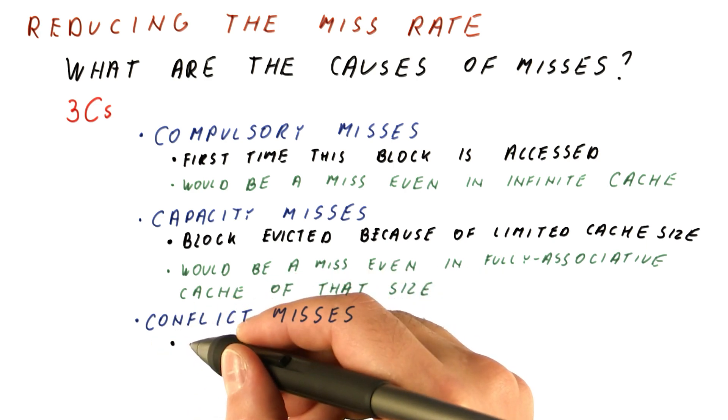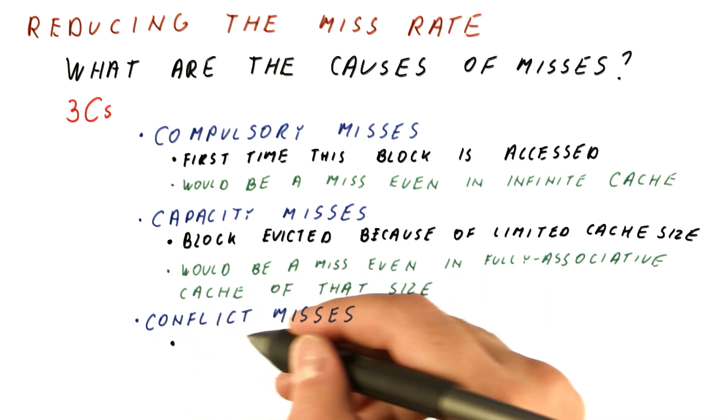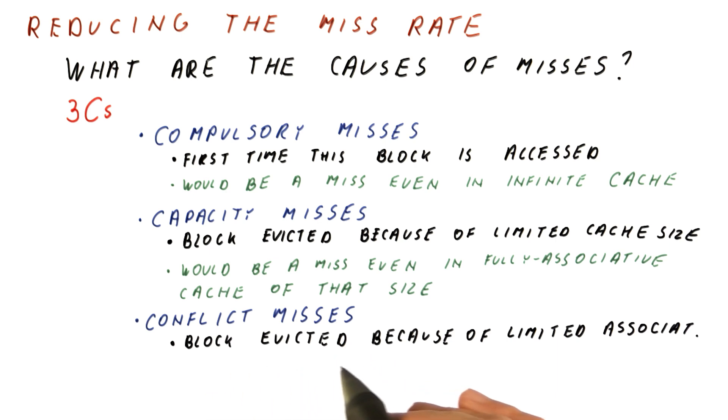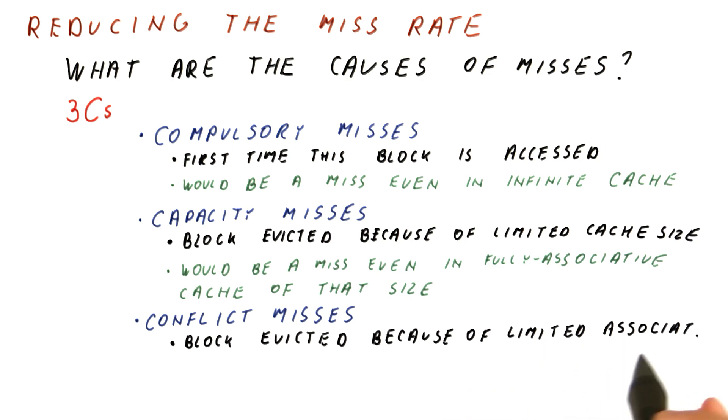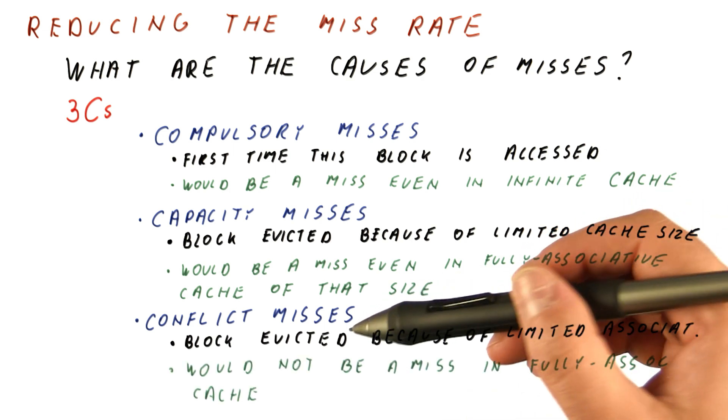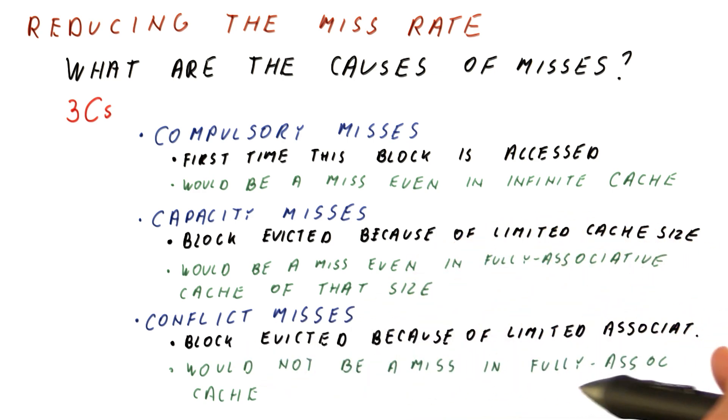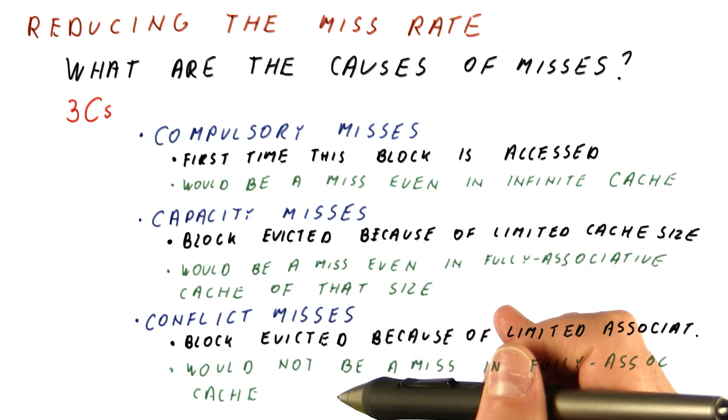Finally, conflict misses occur because of conflicts within a set. The block was evicted not because the cache didn't have enough space in it, but because it had limited associativity. A conflict miss is a miss that would not be a miss if the cache was fully associative and of the same size.